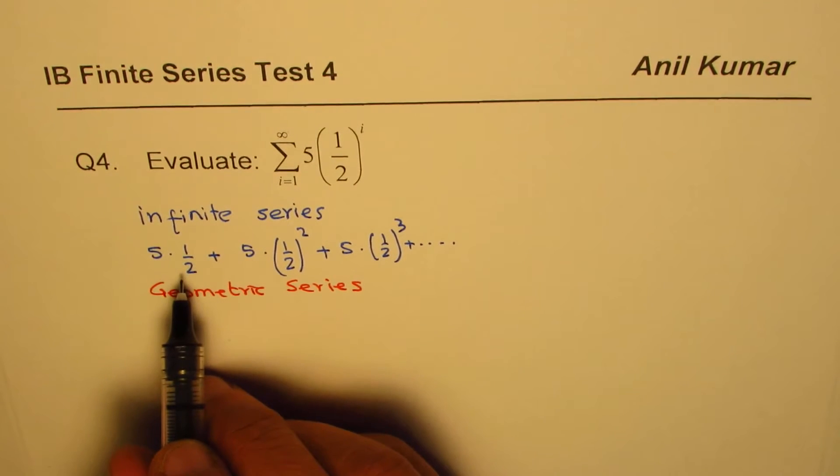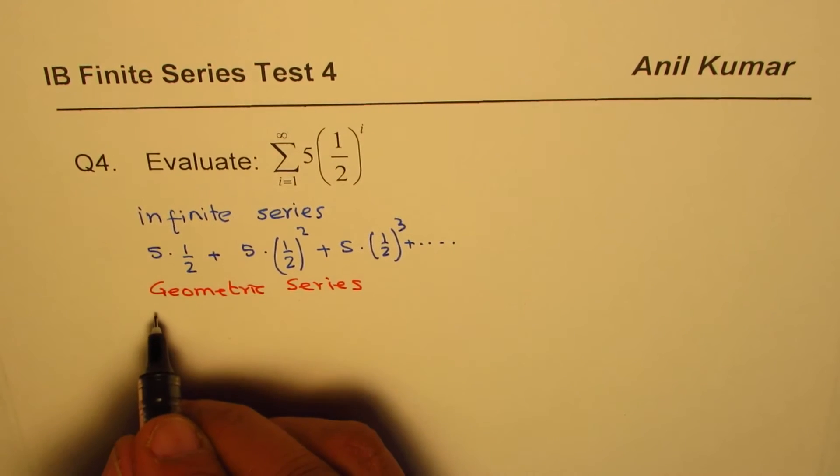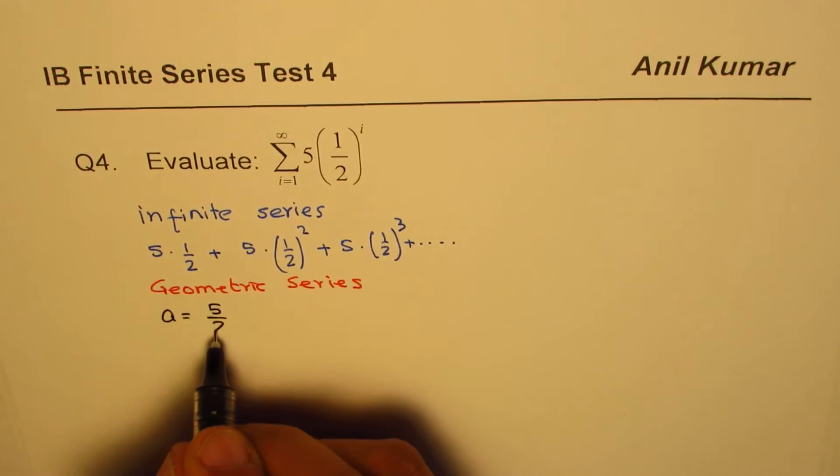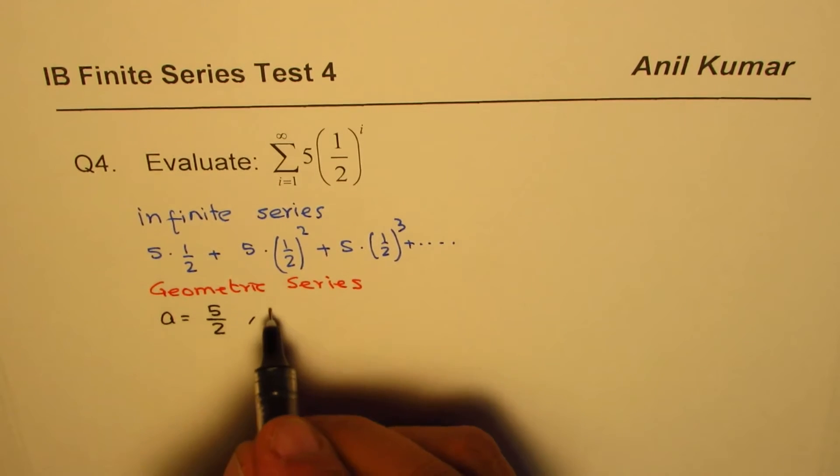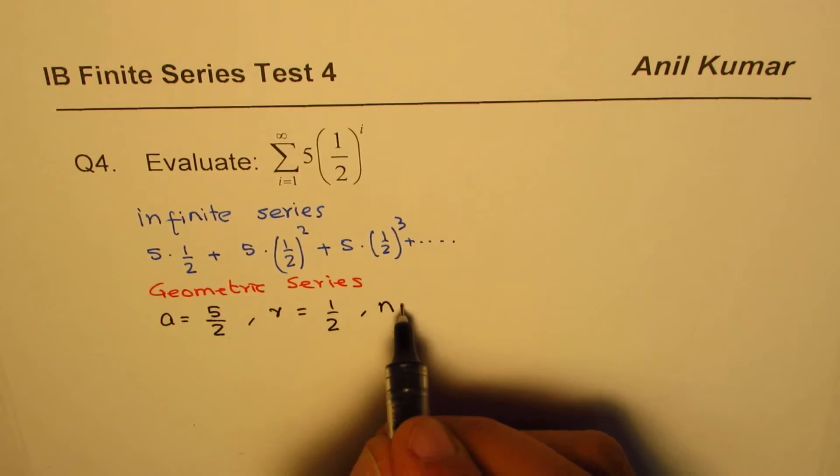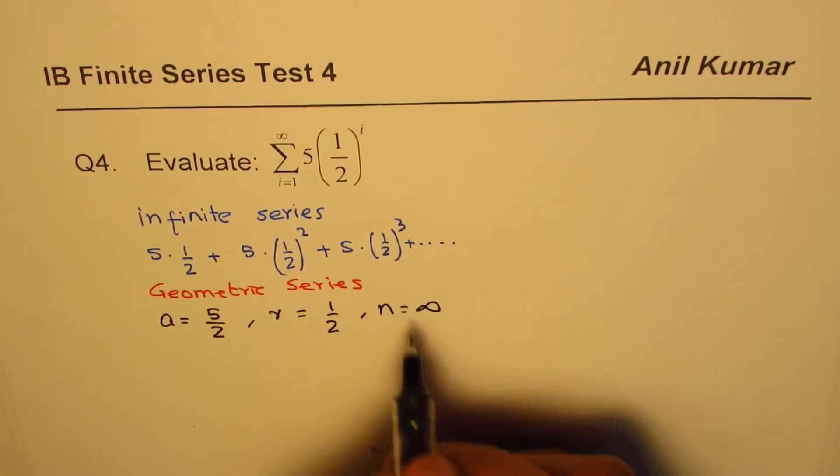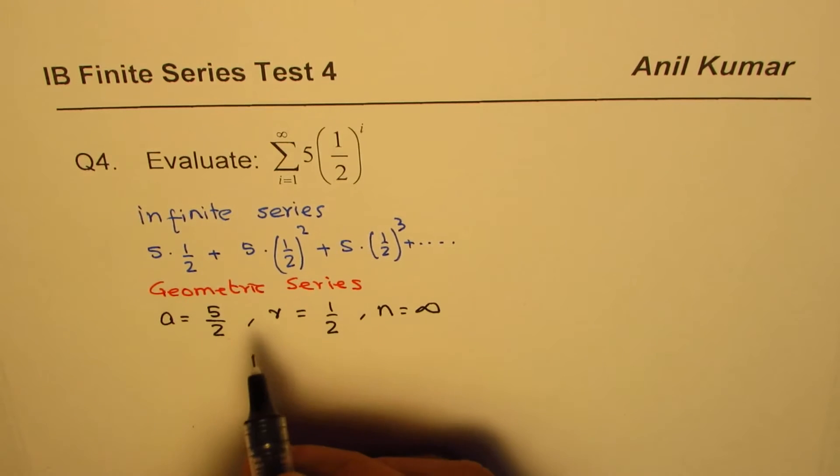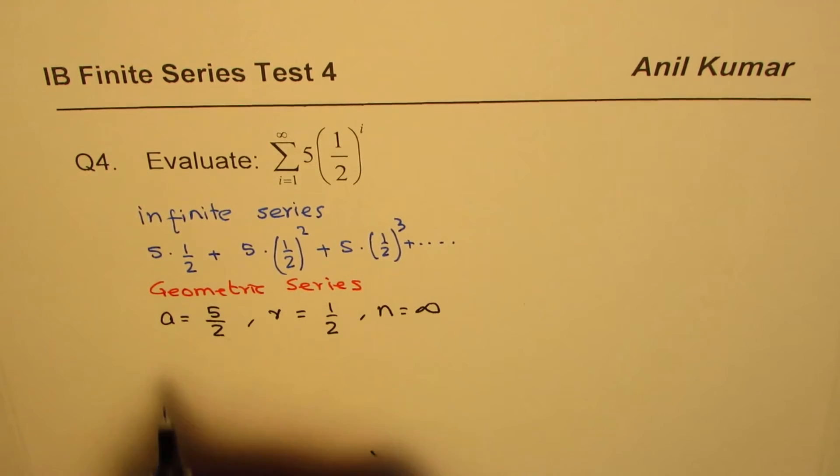Now in this geometric series, what is the first term? The first term is five times one-half, so let me write a as 5/2. And what is r? It is being multiplied by one-half each time. And how many terms are there? It is approaching infinity, so an infinite geometric series.